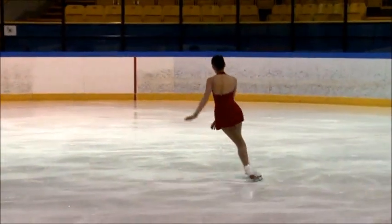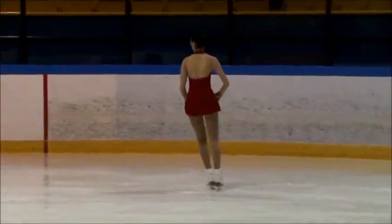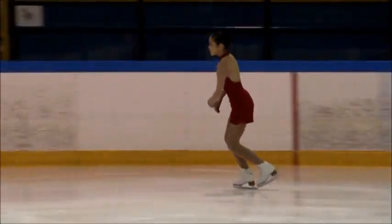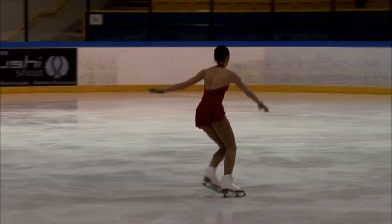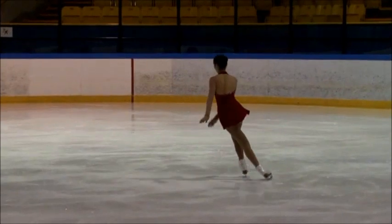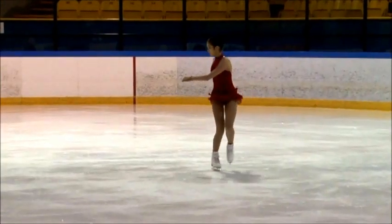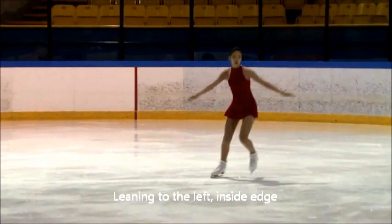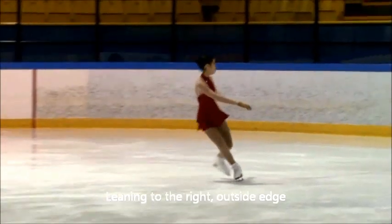Now, you might have noticed that there are often edge changes when a skater is skating. An edge change is when you change your edge, whether it is from the inside edge to the outside edge, or from outside to inside. An edge change is done by a shift in the center of gravity. If you are moving on one leg, leaning to the left, and then you start leaning to the right, your edge will change.